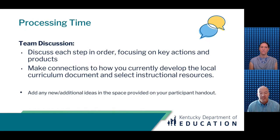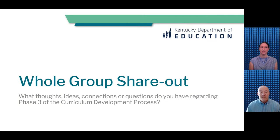We want to give you an opportunity to process what you read with your team. Discuss each step in order, focusing on the key actions and products. Make sure talk time is shared equitably as you ask each other clarifying questions and make connections regarding how you currently develop the local curriculum document and select instructional resources. Capture any new or additional ideas in the space provided on your participant handout. Pause the video and restart after your team discussion. If you have more than one team, have a whole group share out. What thoughts, ideas, connections, or questions do you have regarding Phase 3 of the curriculum development process?